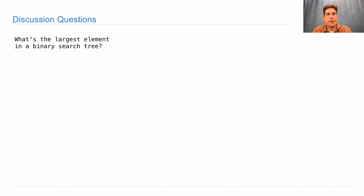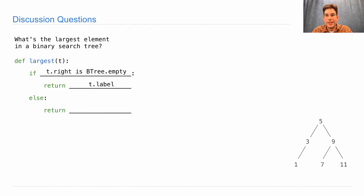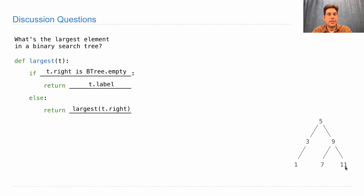Here are a couple of discussion questions about processing binary search trees. What's the largest element in a binary search tree? Take in the tree t and implement, according to this template, a function that returns the largest element. If the largest element is 11, the solution is to always look right. If there's nothing to the right, then you must have already reached the largest element. Otherwise, somewhere in the right branch, there's an even larger element, so we just find the largest thing in t.right.